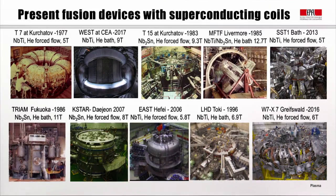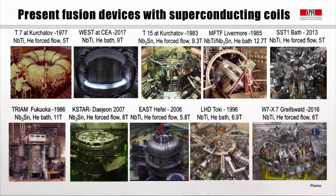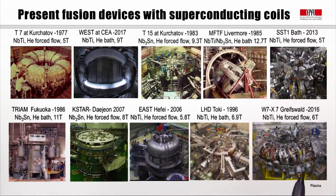Just to show pictorially that we are already using several fusion devices with superconducting coils: starting from the one built in 1977 at Kurchatov in Russia, going up to 5 Tesla with niobium-titanium coils, up to the most recent WEST facility at CEA — a new version of Tore Supra in France — employing niobium-titanium going up to 9 Tesla, and several other examples including EAST in China, K-STAR in Korea, and the superconducting stellarator going up to 6 Tesla, also using niobium-titanium with forced-flow helium cooling.